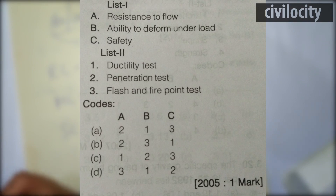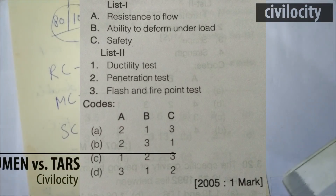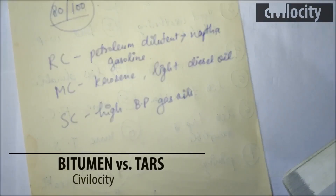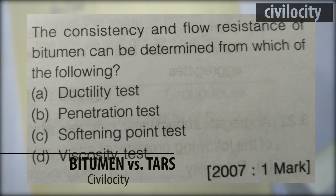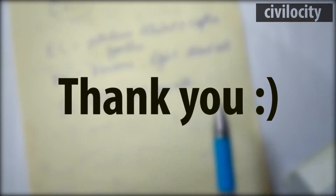We can conclude that bitumen is brittle, and if it's more brittle it can deteriorate under small load, so we connect the ductility test with the ability to deform under load — B with 2. The last is penetration test with resistance to flow. The consistency and flow resistance of bitumen can be determined by viscosity. In the next lecture we will talk about soils and its tests. Thank you.